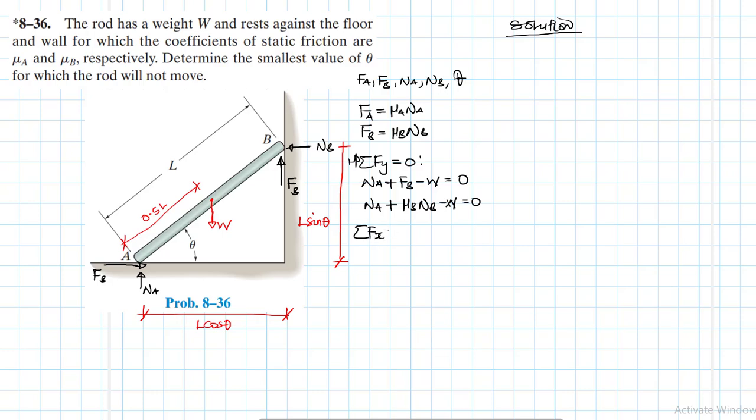Let's move on. Then we have summation of forces in the x direction equal to zero. What do we have? We have F_A minus N_B equal to zero. Replacing the friction equation for F_A there, we are going to have μ_A N_A minus N_B equal to zero.